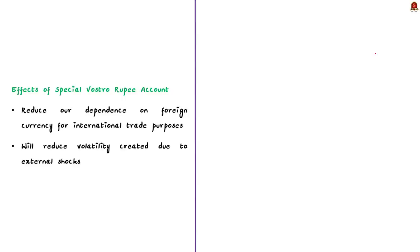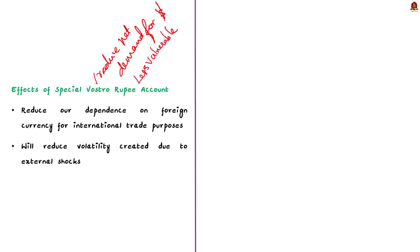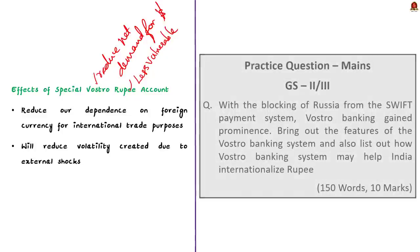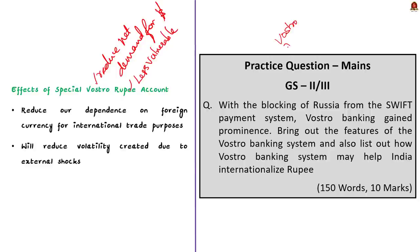According to the Economic Survey, this new framework could largely reduce the net demand for US dollars for settlement of current account-related trade flows, thereby reducing our dependency on foreign currency for international trade. This will ultimately make our country less vulnerable to external shocks. In this discussion we saw what a Vostro account is, how a Special Vostro account works, and the possible effects of the Special Vostro Rupee framework. Now let us move on to the next news article.